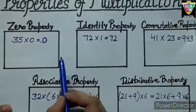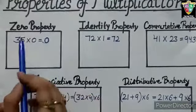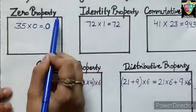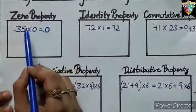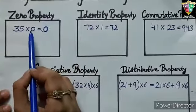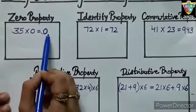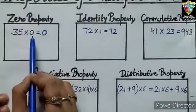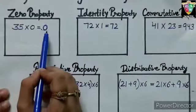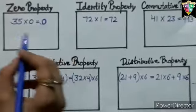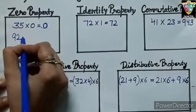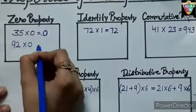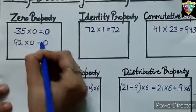There are 5 properties involved in multiplication. First, zero property of multiplication. The product of any number multiplied by 0 will be 0. For example, 35 multiplied by 0 equals 0. Similarly, 92 multiplied by 0 will be 0.